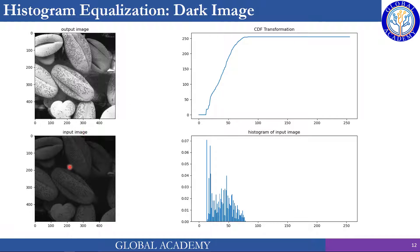This is the dark image as input this time. The same steps apply: first calculate the histogram, then the CDF. This darker grayscale range will be remapped to the entire range 0 to 255, and we got this same high contrast image.